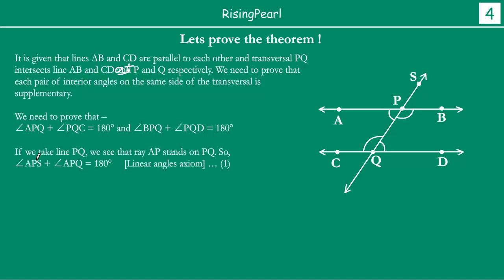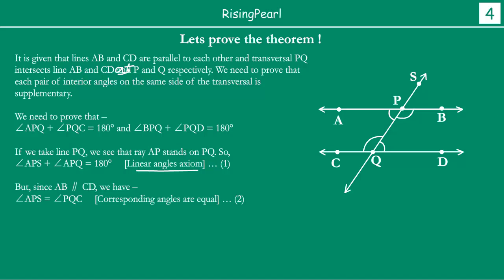Beginning the proof: if you take line PQ, we see that ray AP stands on PQ. So angle APS plus angle APQ equals 180 degrees — this comes from the linear angles axiom. Therefore angle APQ plus angle APS equals 180 degrees. This is equation 1. Since AB is parallel to CD, angle APS equals angle PQC because corresponding angles are equal. This is equation 2.